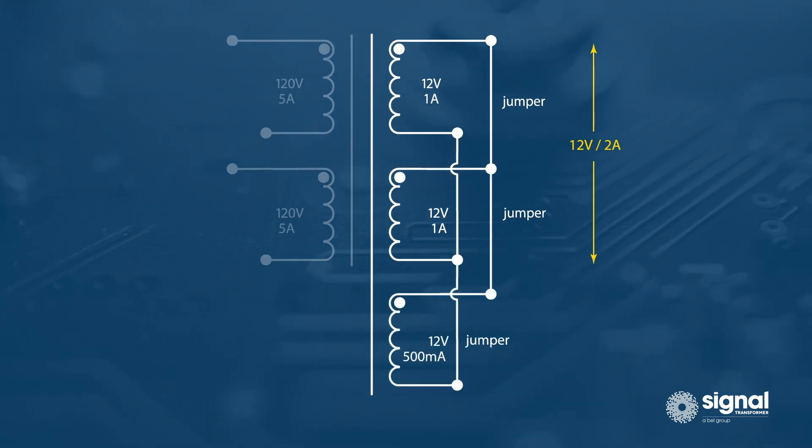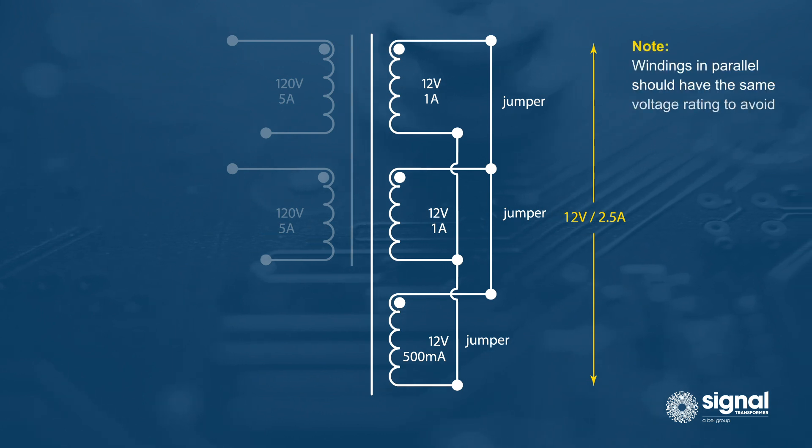Adding a 12-volt 500 milliamp winding in parallel increases the output rating to 2.5 amps. Note that windings in parallel should have the same voltage rating, as dissimilar ratings can result in a hazardous condition.